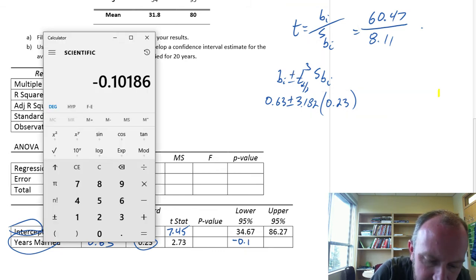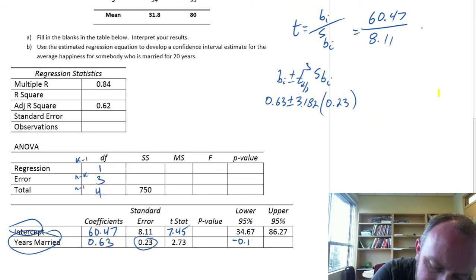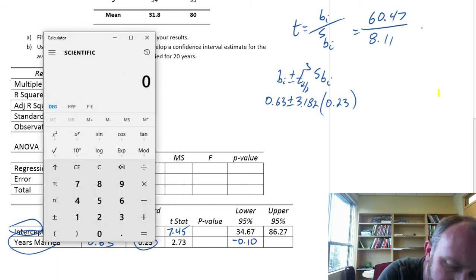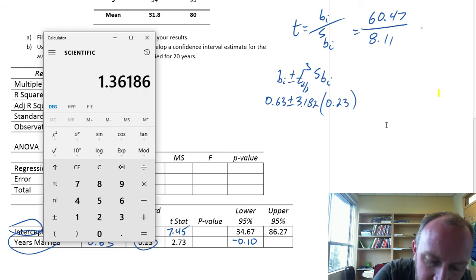And the upper limit is going to be 0.63 plus 3.182 times 0.23, which is 1.36.